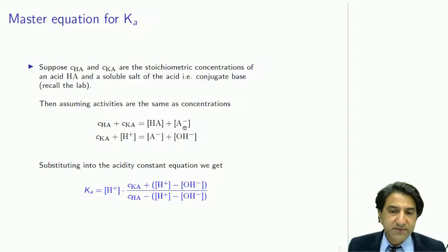If A dissociates, it forms A-. If it doesn't dissociate, it forms HA. If we add those two concentrations together, we get the total amount of A stuff in the solution as a concentration.